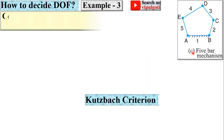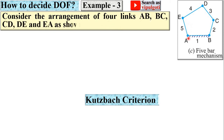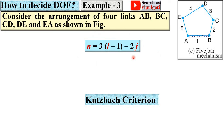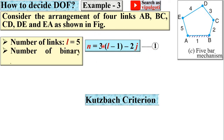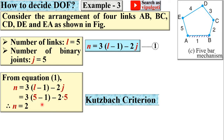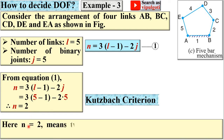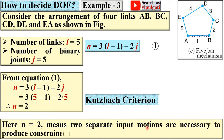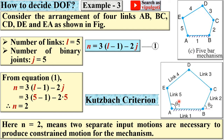Example 3: Consider the arrangement of five links AB, BC, CD, DE, and EA as shown in the figure. Number of links L = 5, number of binary joints J = 5. Applying the Kutzbach criterion: N = 3(5 − 1) − 2(5) = 2. N = 2 means two separate input motions are necessary to produce constrained motion — two input parameters θ₁ and θ₂, corresponding to the rotational motion of links EA and BC.